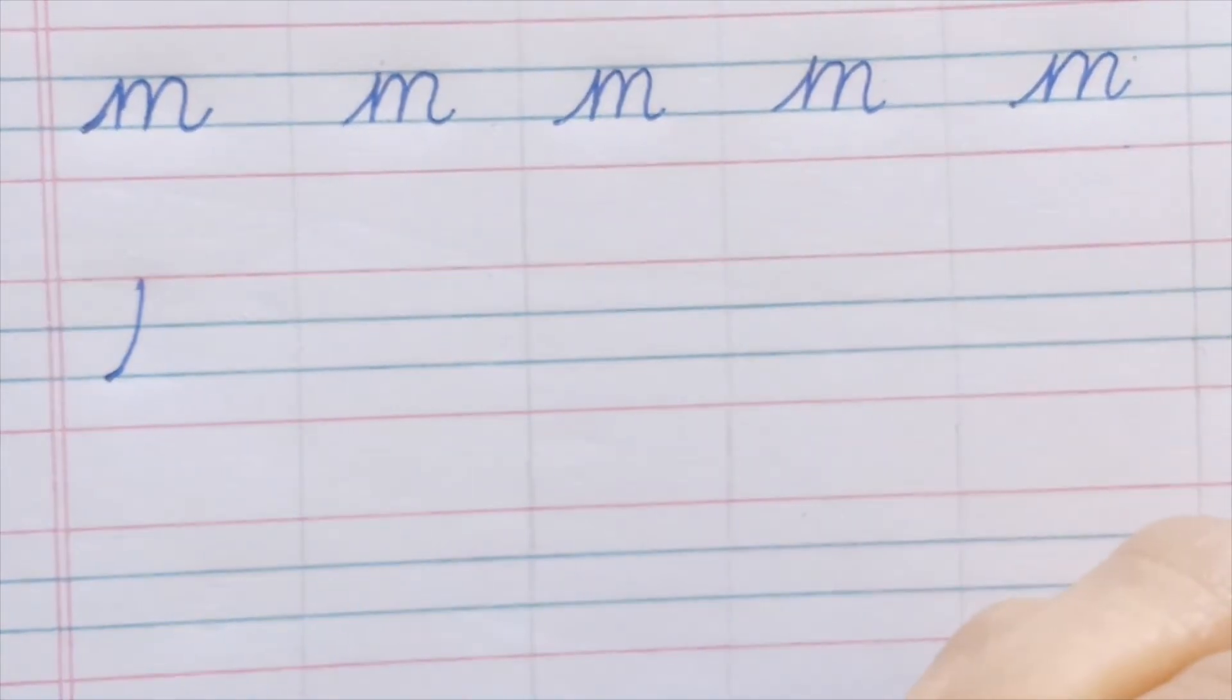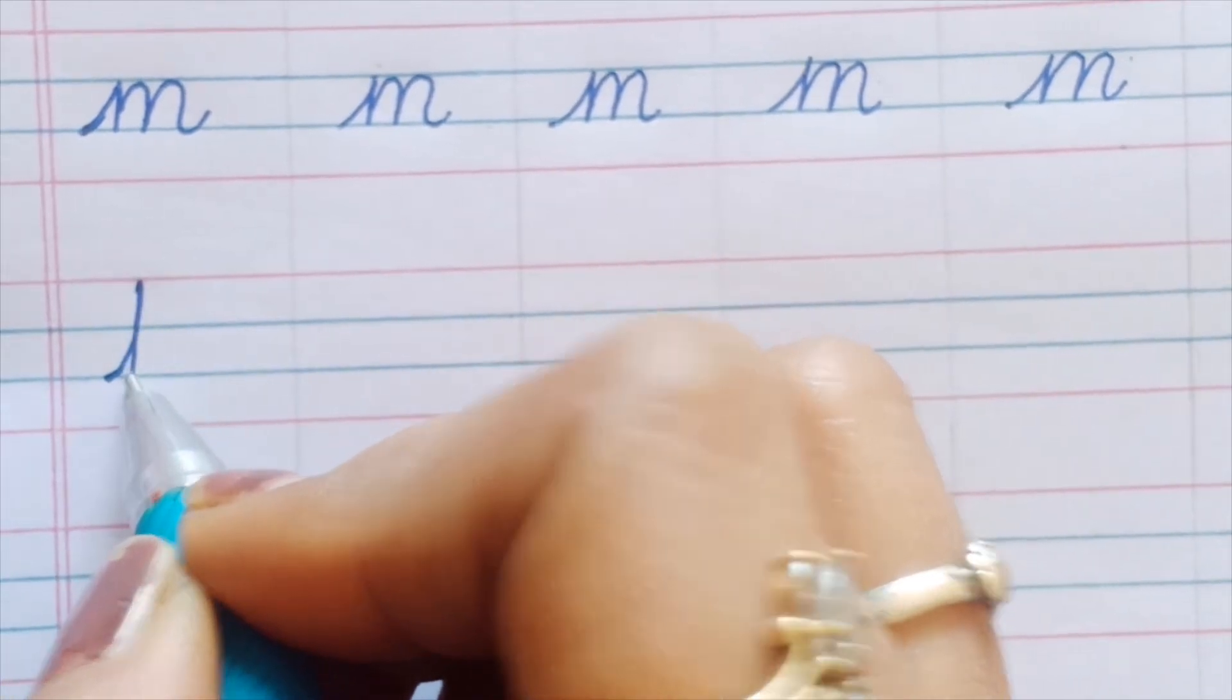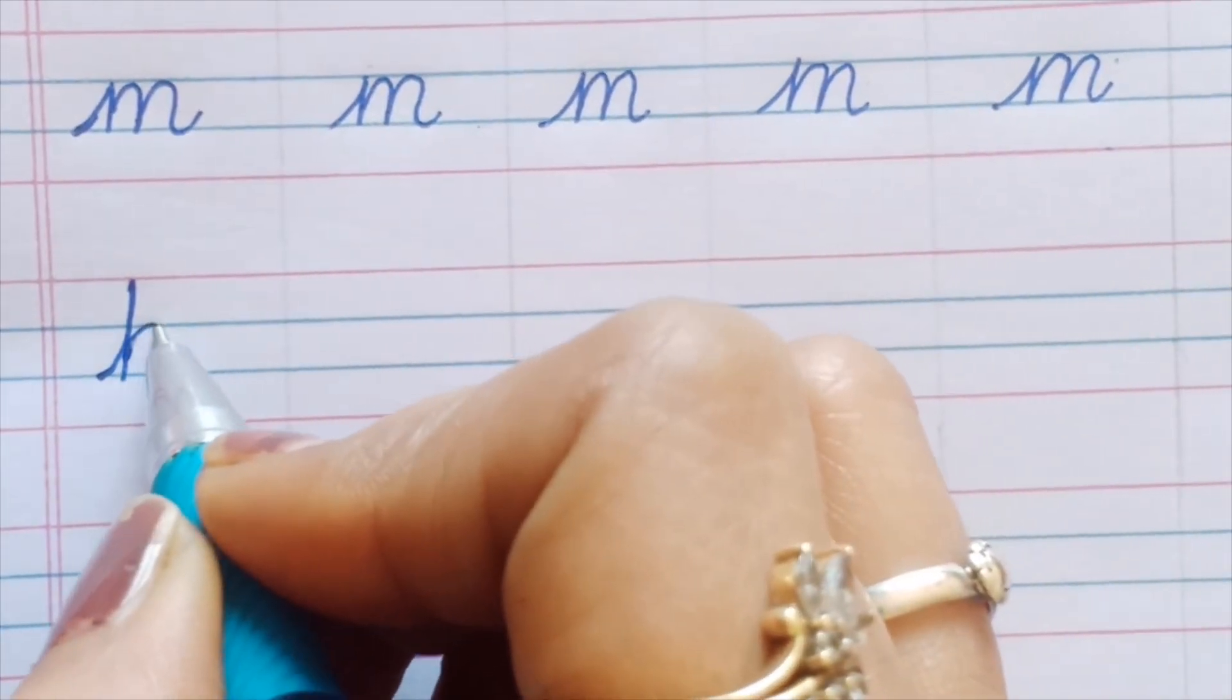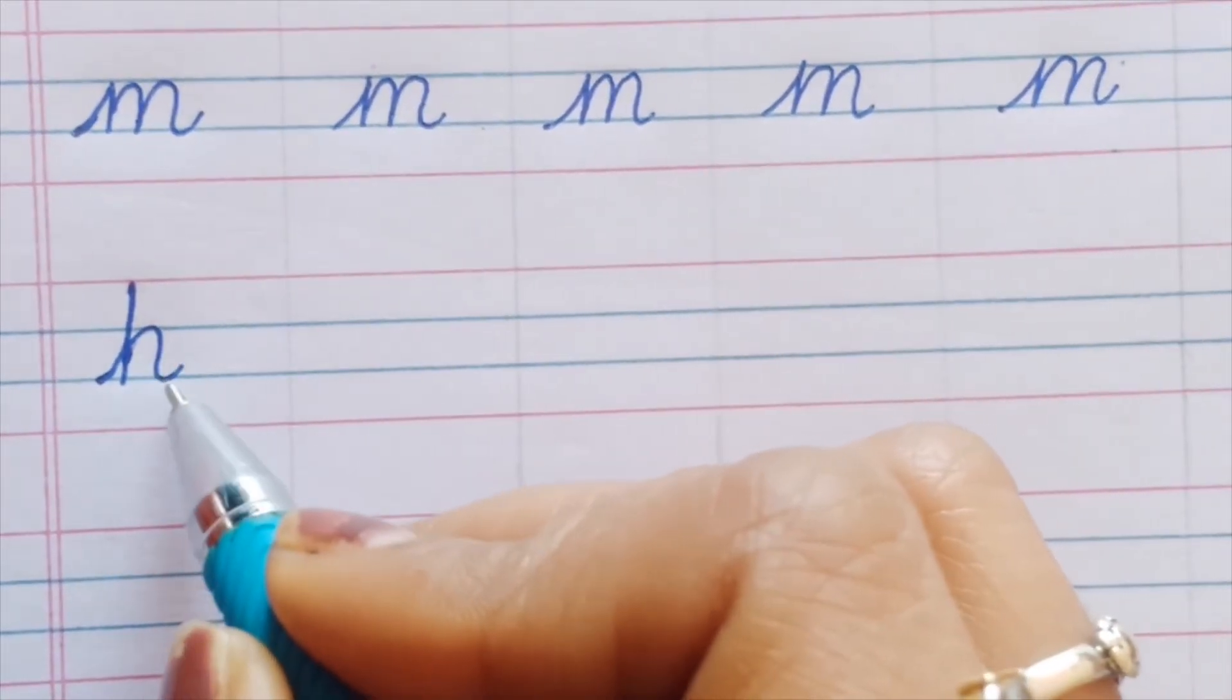For small 'h', we need to start with the third line only, but this time we will bring it up to the top line. Be very attentive. Bring it to the top, then down with a straight line - that's the second stroke - then make one bump, and then the tail.